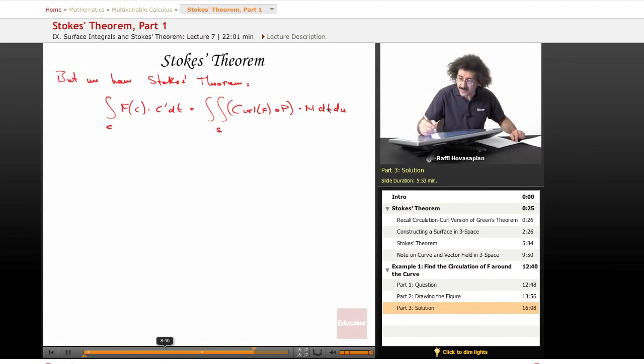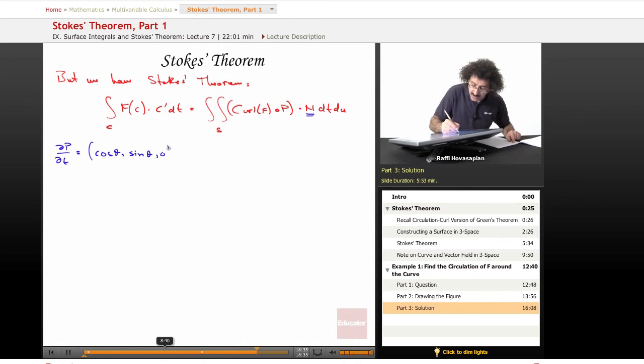Let's find n first. When I take ∂P/∂t, I get (cos θ, sin θ, 0). When I take ∂P/∂θ, I get (-t sin θ, t cos θ, 1).